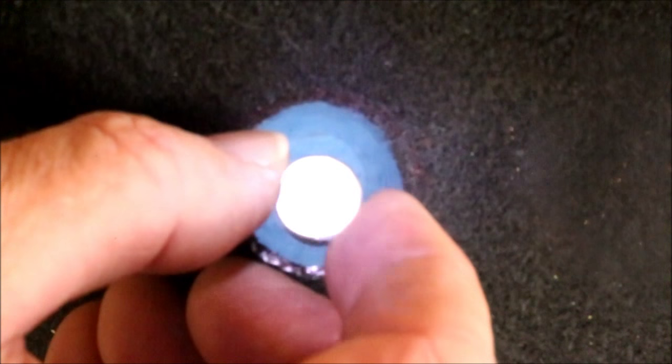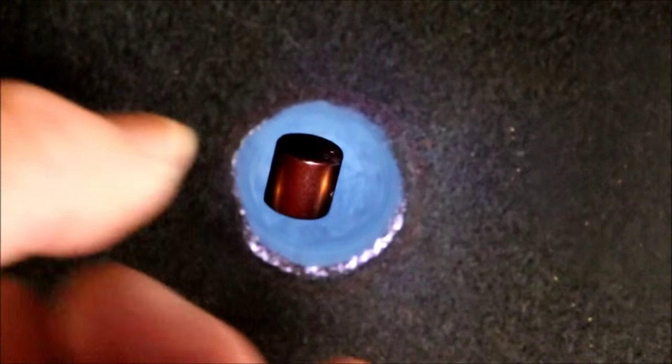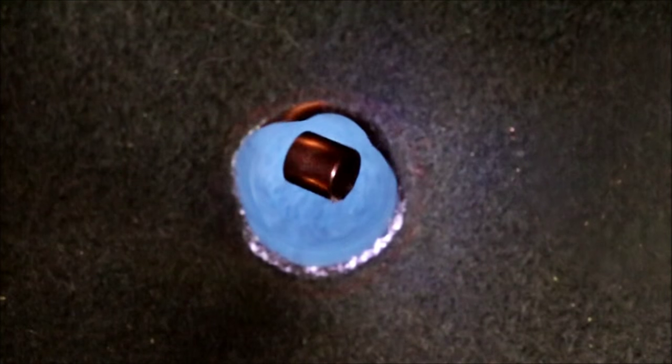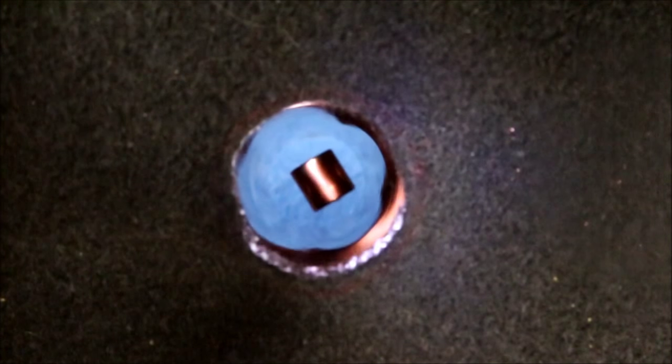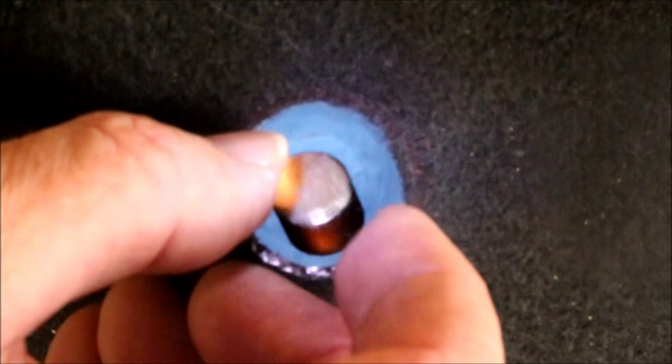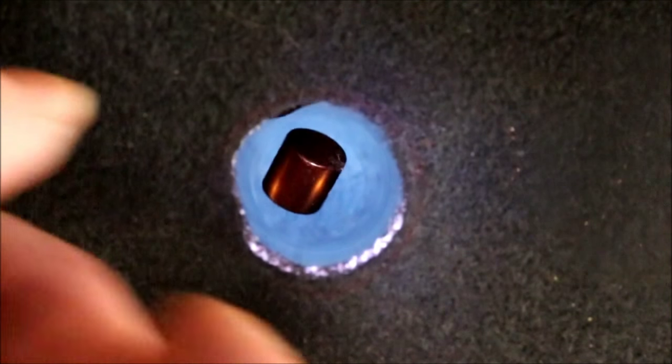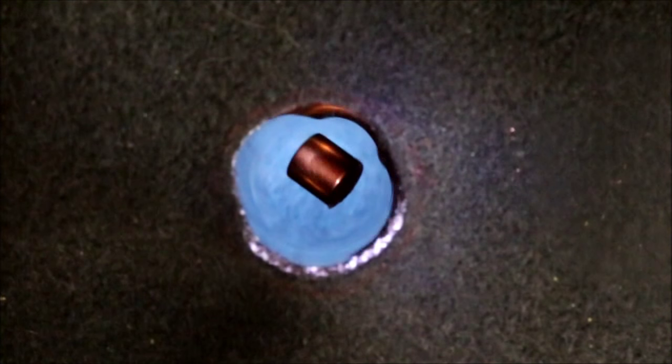Watching the magnet fall down the tube in slow motion shows that it tends to stay in the center of the tube. The reason is the current flowing around the perimeter of the tube interacts with the magnet's magnetic field to create the Lorentz force, which is a force that pushes in radially all the way around the tube, keeping the magnet centered.